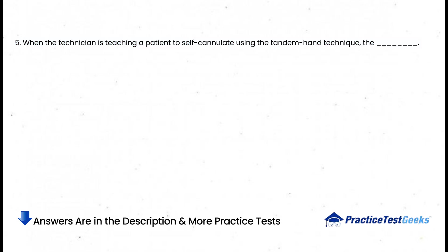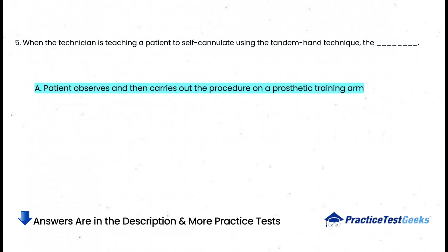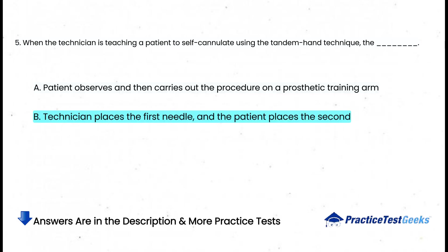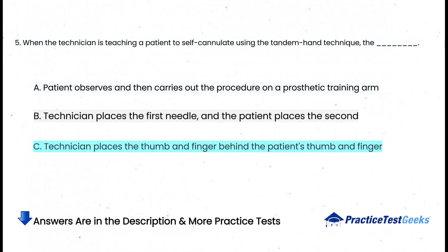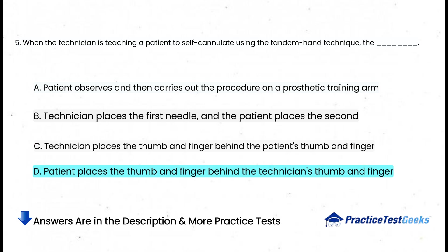When the technician is teaching a patient to self-cannulate using the tandem hand technique: a. The patient observes and then carries out the procedure on a prosthetic training arm, b. Technician places the first needle and the patient places the second, c. Technician places the thumb and finger behind the patient's thumb and finger, d. Patient places the thumb and finger behind the technician's thumb and finger.